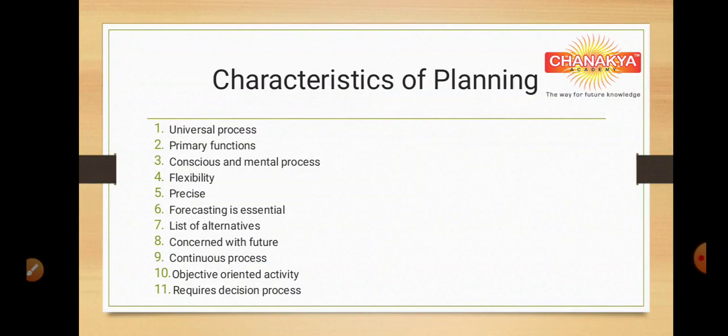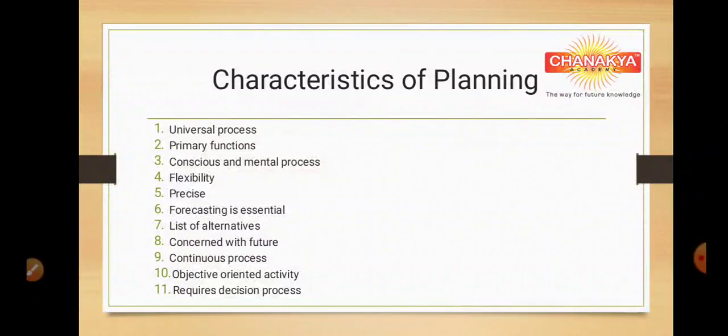Objective-oriented activity: planning is made on the basis of achieving the objective. We plan so that we can achieve pre-determined objectives. Management decides future targets as per the objectives of the business. Planning also requires decision making — it involves selection of the best alternative, and for that we require to make decisions.